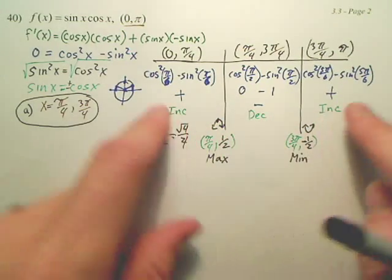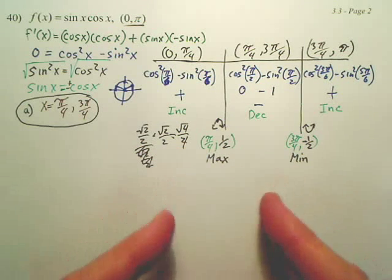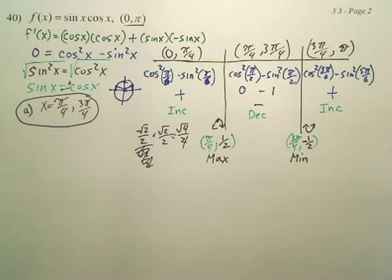This is decreasing, increasing, increasing. Those are the intervals. Critical numbers help you find your table. That's the process.